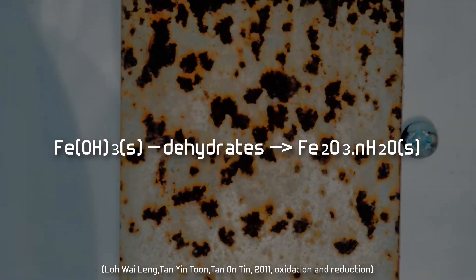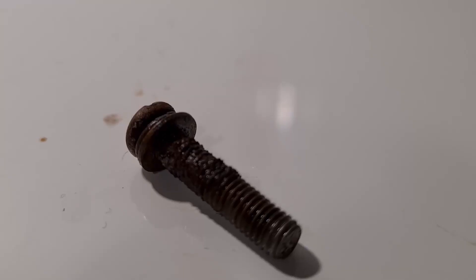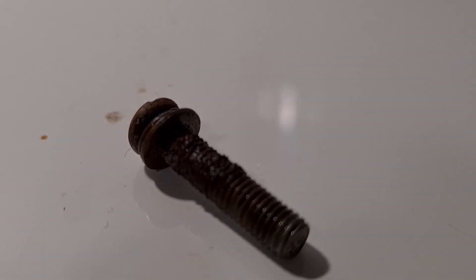Once that dries, we get ferric oxide, commonly known as rust. Okay, so now we know how we got ourselves into this mess. But what does this mess mean for us?